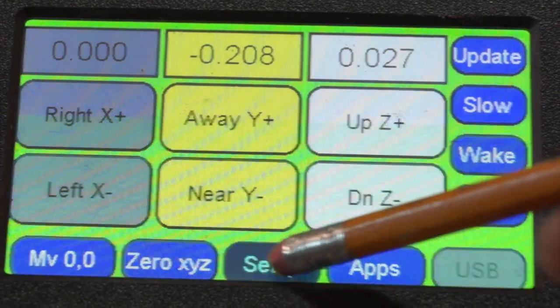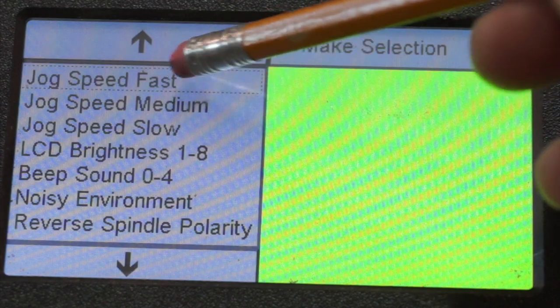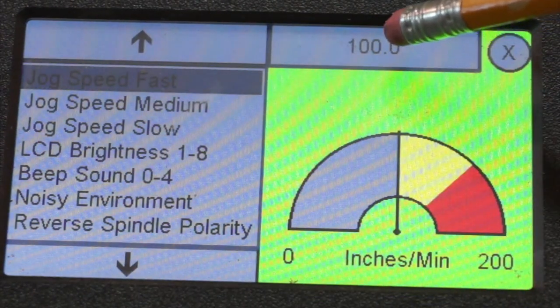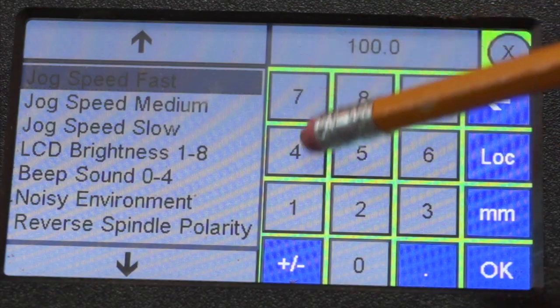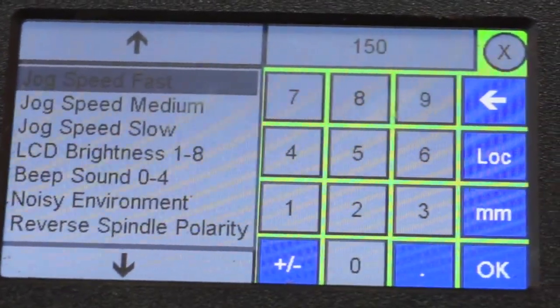You just go into setup. Pick the speed you want to change. Let's go to the fast one and change it back to what it was. 150. Hit OK.